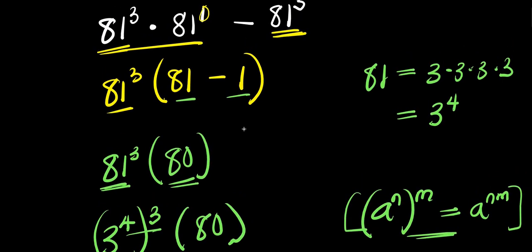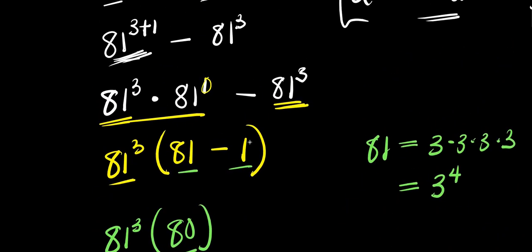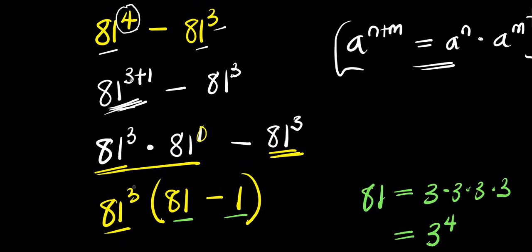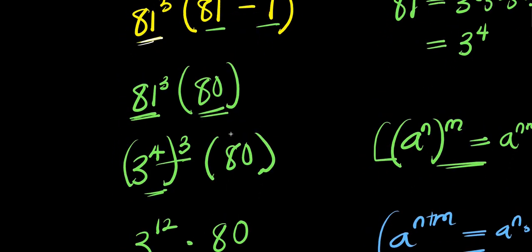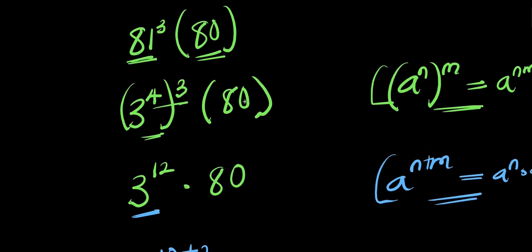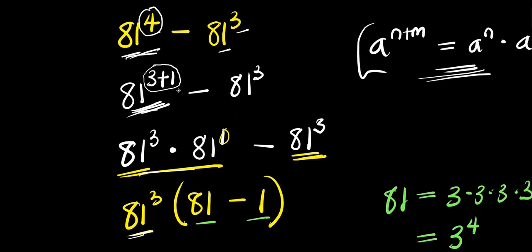To summarize: we expressed 81 to the power 4 as 81 to the power 3 plus 1, applied the exponent identity, then factored out 81 to the power 3. After factoring, we were left with 81 to the power 3 times 80. From there, we manipulated it by expressing 81 as 3 to the power 4 and computed the final value. The answer is 42,515,280.